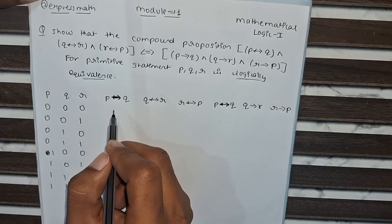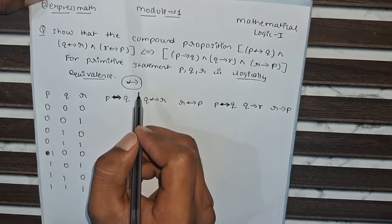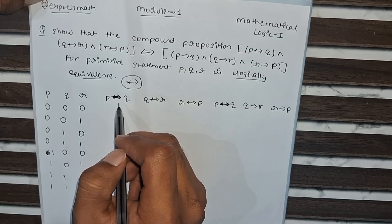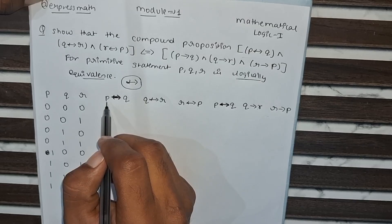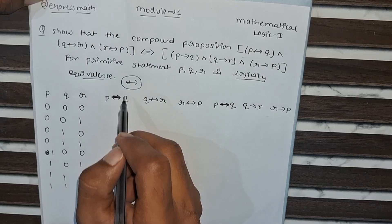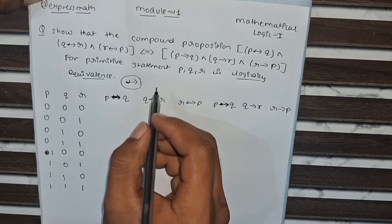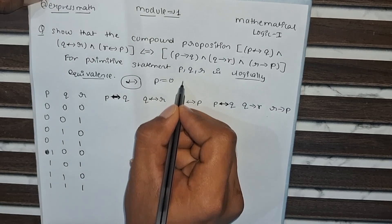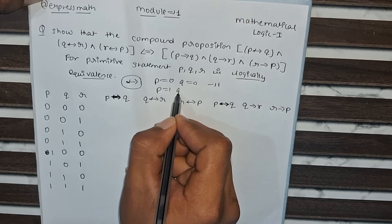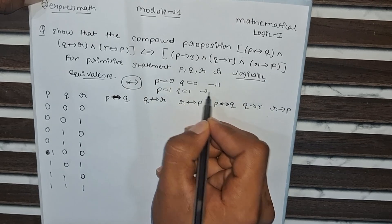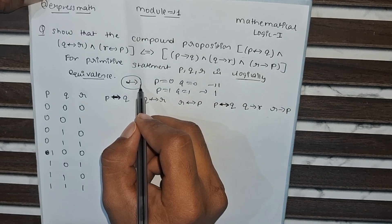Here you can clearly see the symbol of biconditional. So how can we obtain the value of biconditional? In biconditional P and Q, if both P and Q values are true or both are false, then it will be true; otherwise the remaining cases will be false. For example, if P equals 0 and Q equals 0, then the value will be 1. If P equals 1 and Q equals 1, then the value will also be 1; all other cases will be 0.